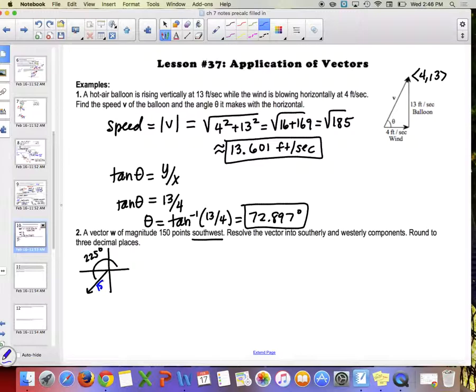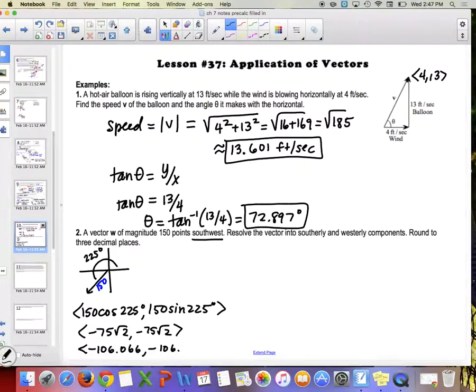What would the theta be for that? 180 plus 45, yeah it's going to be 225 degrees. It says resolve the vector into southerly and westerly components, so it's basically saying how far south is it going, how far west is it going. The magnitude is 150, so if it was like a plane or something it would be like 150 miles per hour, kilometers per hour, there would be some kind of thing like that. We want to know what the components are, we want to know component form. So we just talked about how to do that as well, right?